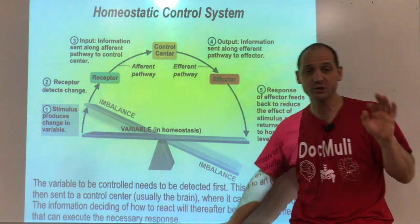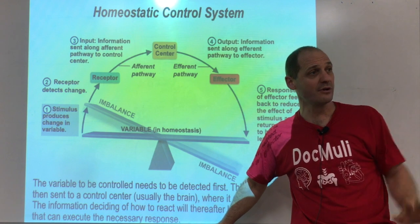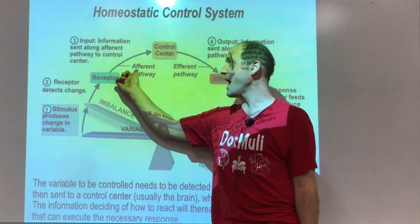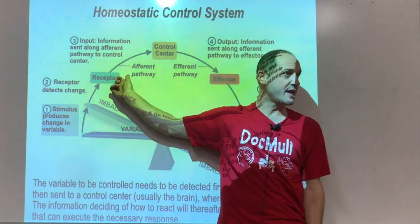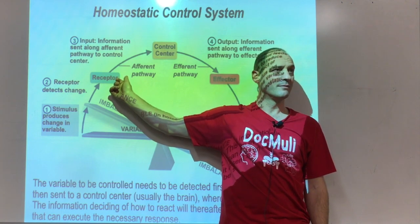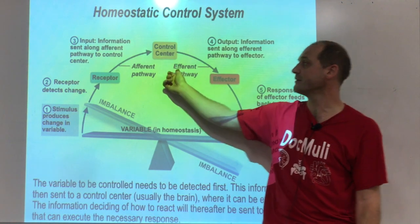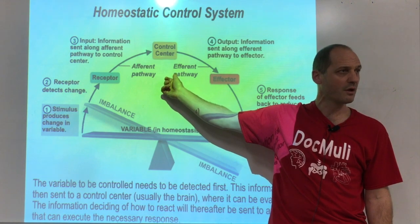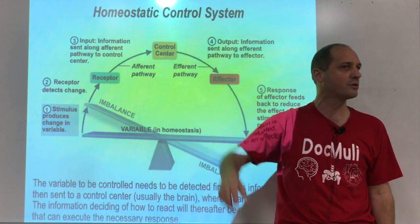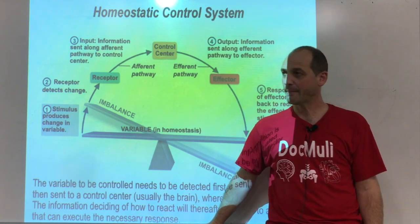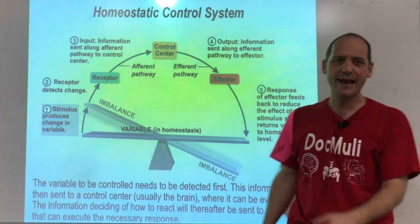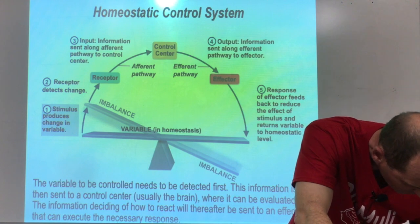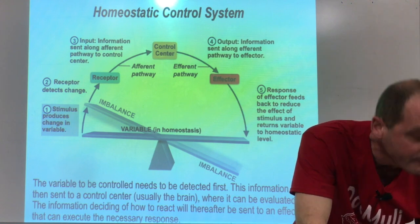A helpful mnemonic: afferent — ascending — both start with A, so information goes up. Efferent — exit — both start with E, so information exits the brain. Once you have that bridge for a while, the terms become natural vocabulary. I actually learned English through doing anatomy, which made for a funny experience.